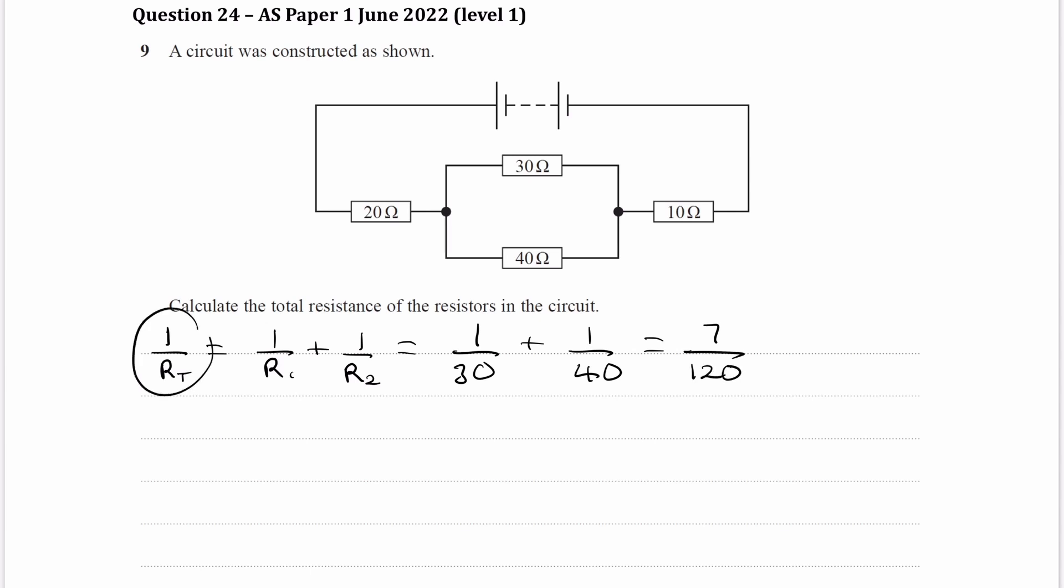So then we have this equation, 1 over RT is equal to 7 over 120. We can then flip both fractions. So RT over 1 is equal to 120 over 7. Or in other words, RT is equal to 17.143 ohms.